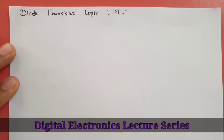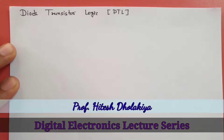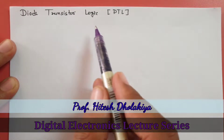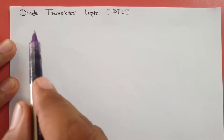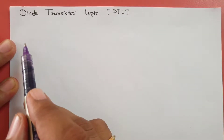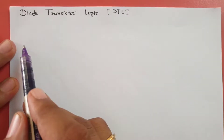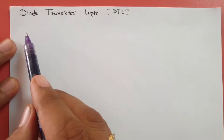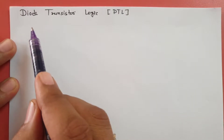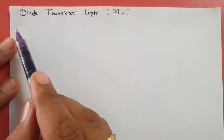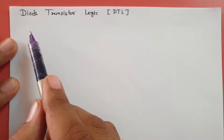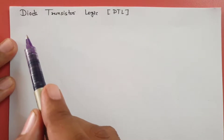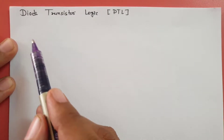Welcome to the digital electronics lecture series. Professor Ritesh Dulakya is going to explain diode transistor logic in this video. In the previous video, resistor transistor logic was explained, and some disadvantages of the RTL family were seen: lower noise margin, lower fan out, slower speed, and high power dissipation — which is why RTL is not used in recent integrated circuits.